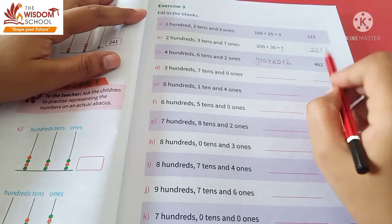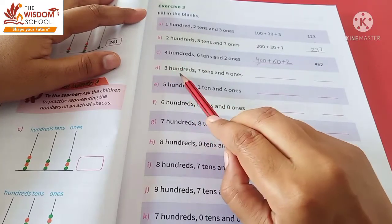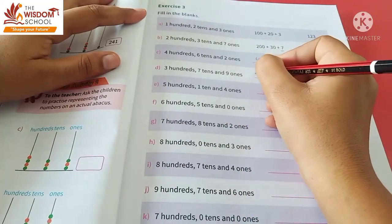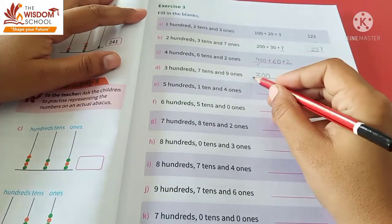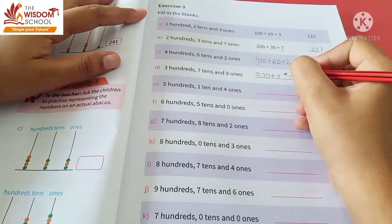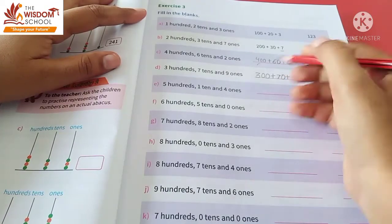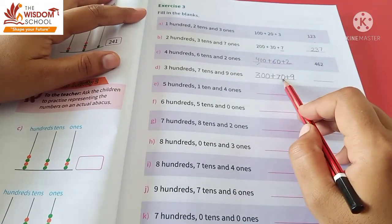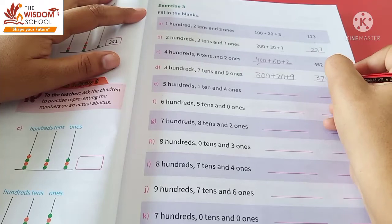Let's look at one more. It is 3 hundreds, 7 tens, and 9 ones. So we will write 300, plus 70 for 7 tens, plus 9. Together, 300 plus 70 plus 9 means 379.